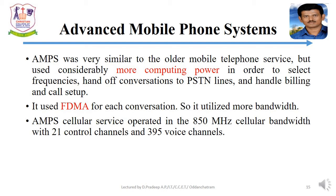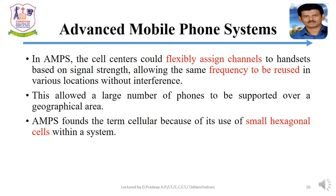AMPS cellular service operated in the 850 MHz cellular bandwidth with 21 control channels and 395 voice channels. The cell centers could flexibly assign the channels to handsets based on signal strength, allowing the same frequency to be reused in various locations without interference.